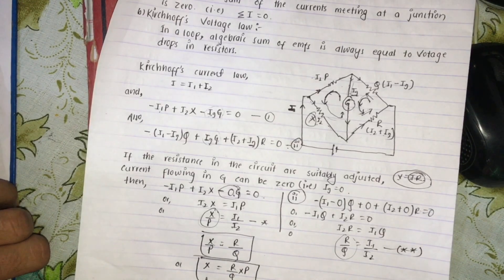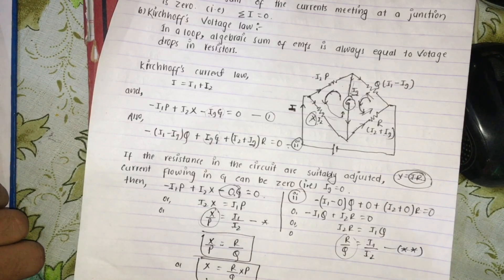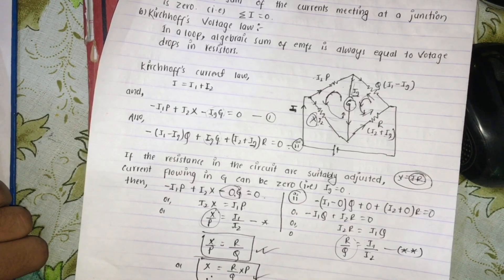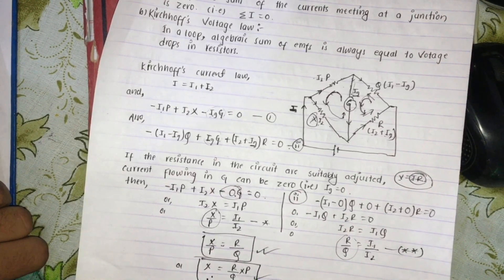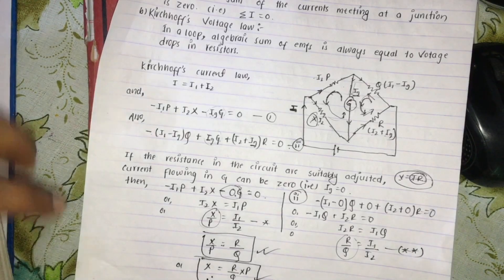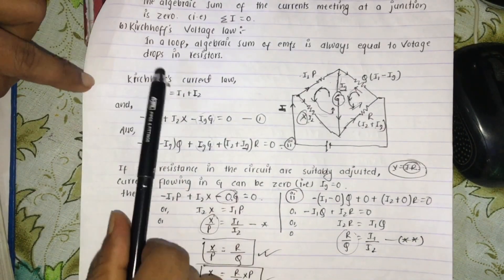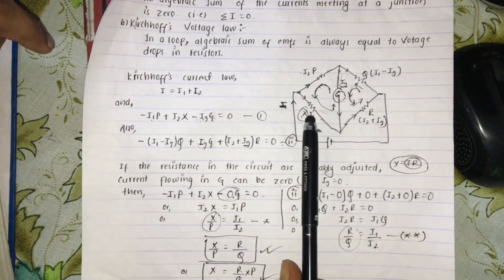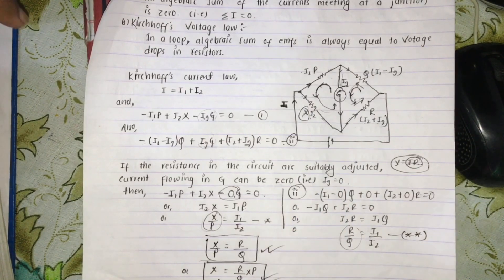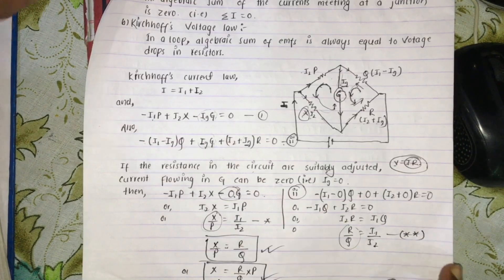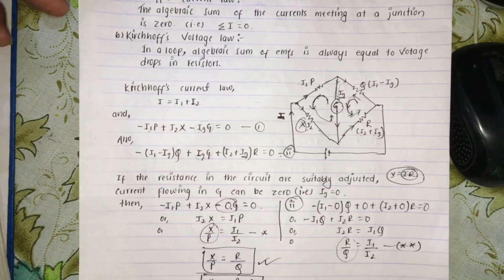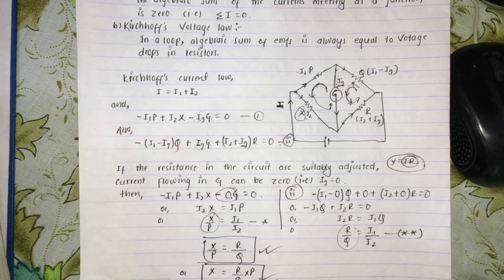We call it the balance condition. This is the balance condition of the Wheatstone bridge. We have the shared balance condition. To summarize this balance condition, the unknown resistance X equals RQ divided by P. Please like, subscribe, and share this video.